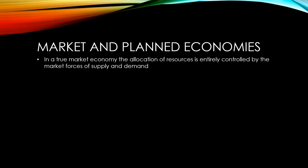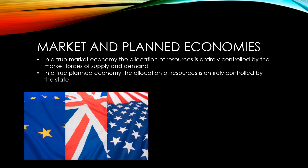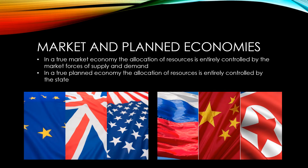In a market economy, the allocation of resources is entirely controlled by the market forces of supply and demand. Whereas in a planned economy, it's entirely controlled by the state. The EU, UK and USA would normally be cited as examples of market economies, while Russia, China and North Korea would be cited as examples of planned economies.